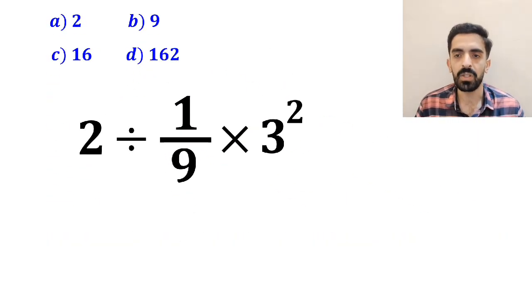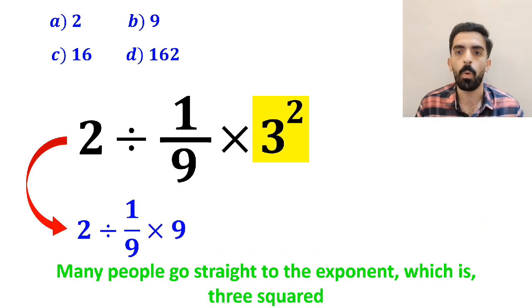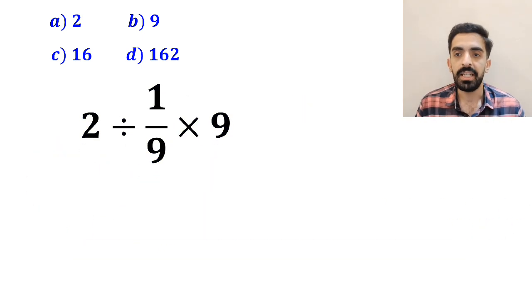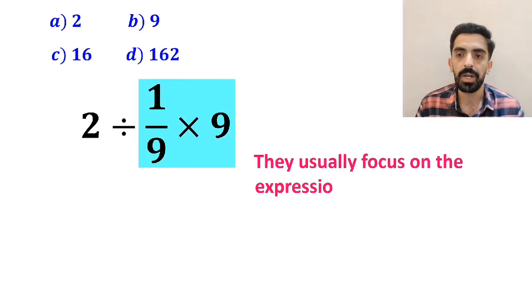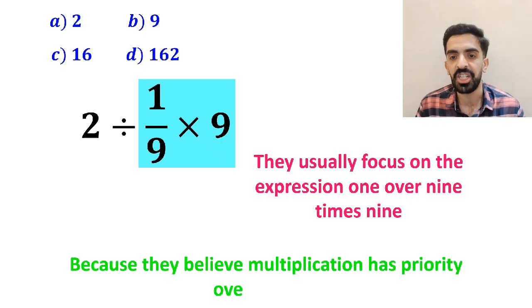In the first step of solving this question, most people go straight to the exponent, which is 3 squared, and simplify the whole expression to 2 divided by 1 over 9 times 9. In the next step, they usually focus on the expression 1 over 9 times 9, because they believe multiplication has priority over division.